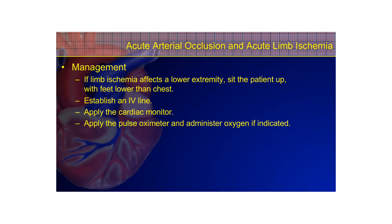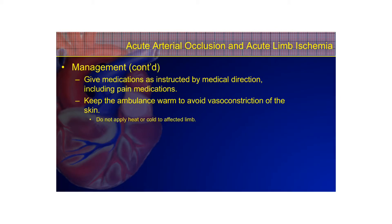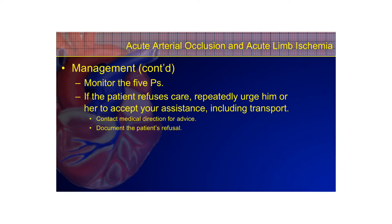Management is mostly supportive prehospitally. Allow the patient to assume a position of comfort, establish IV access, administer oxygen, and monitor. If limb ischemia affects a lower extremity, sit the patient up and place the feet lower than the chest to promote perfusion. Administer pain medications as instructed by medical direction or local guidelines, and keep the ambulance compartment warm to avoid cold-induced vasoconstriction, which would further reduce blood flow.